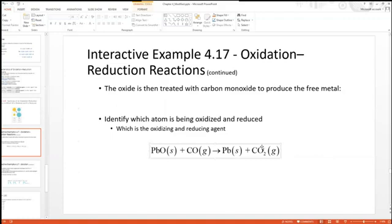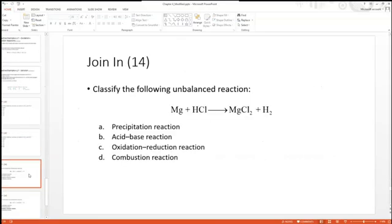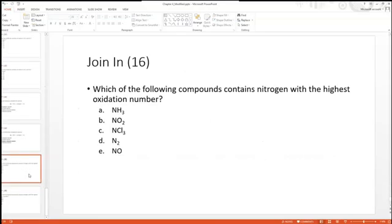For carbon, it goes from plus two to plus four. It is oxidized because it gains an oxidation number going from plus two to plus four. It also gains oxygens, which is another definition of oxidation. We can do some more examples in class, and that's it.